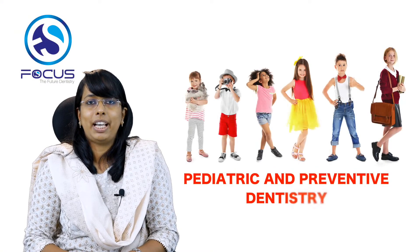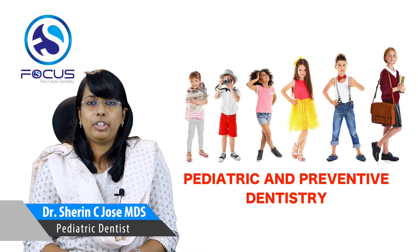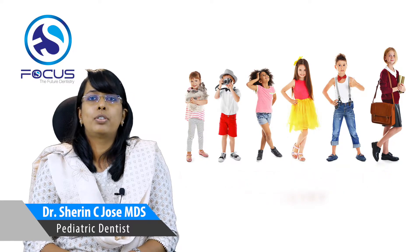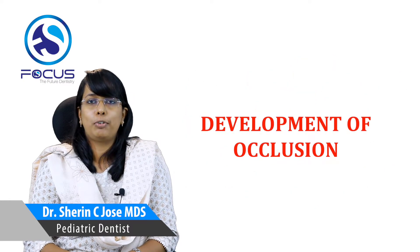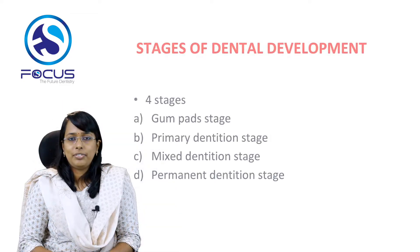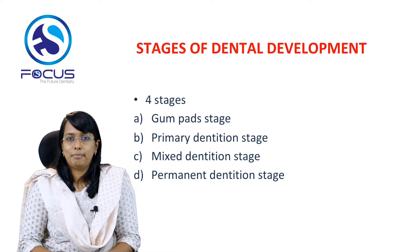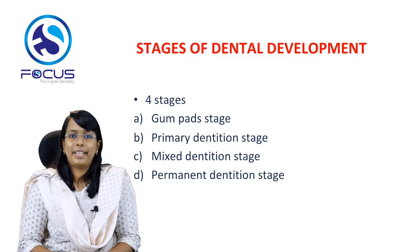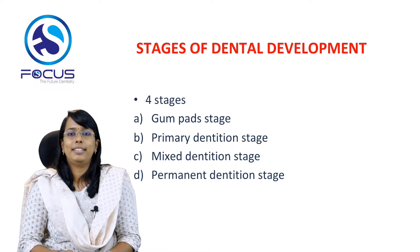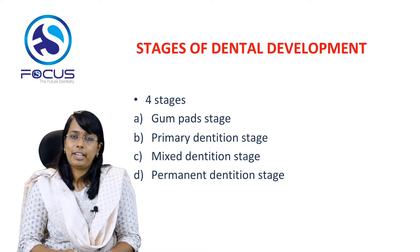Today we will have a brief discussion on pediatric and preventive dentistry, specifically dealing with the development of occlusion. The stages of dental development can be broadly divided into four stages: the gum pad stage, the primary dentition stage, the mixed dentition stage, and the permanent dentition stage. Today we will cover the gum pad stage, its anatomical features, and clinical findings.